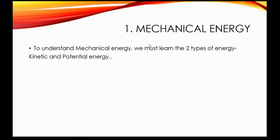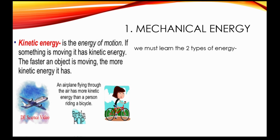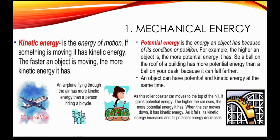Now let's have a deeper understanding of mechanical energy. To understand it, we must look at its two types: kinetic and potential energy. Kinetic energy is the energy of motion — if something is moving it has kinetic energy, and the faster it moves the more kinetic energy it has. A moving airplane would therefore have more kinetic energy than a child riding a bicycle. Potential energy is the energy of an object because of its condition or position — an object far from the ground has more potential energy than one on the ground.